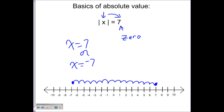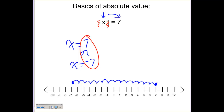Here's where absolute values deviate from regular equation solving. Since the absolute value of x equals seven and we know we're going to have two outputs, we can drop the absolute value bars and write two separate equations: x equals the positive version of that answer, which is seven, or x equals the negative version, which is negative seven.